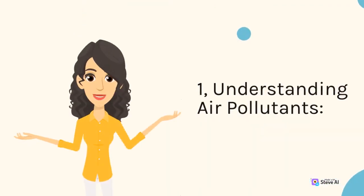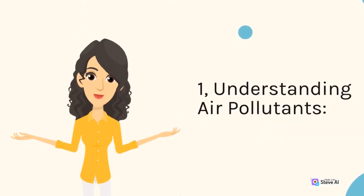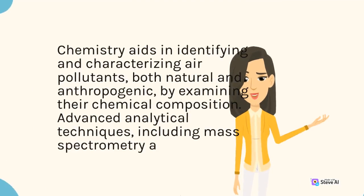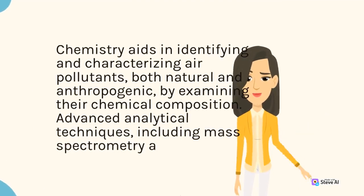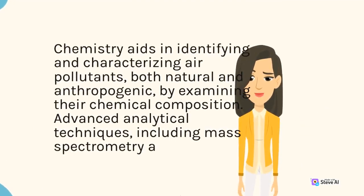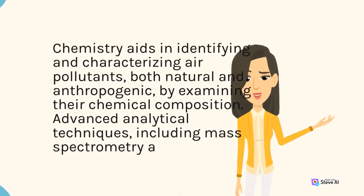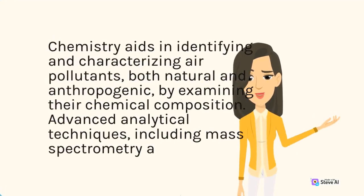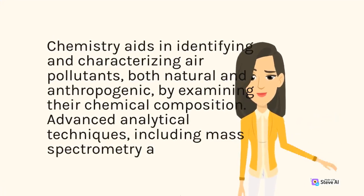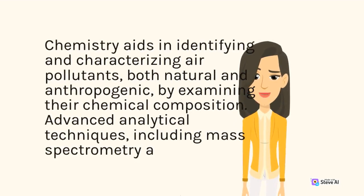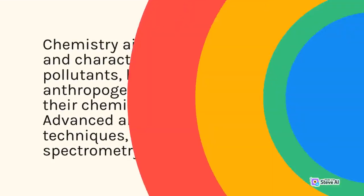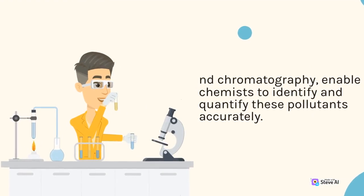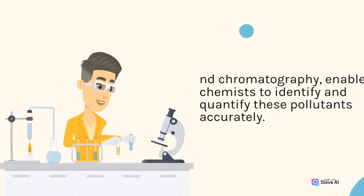1. Understanding Air Pollutants. Chemistry aids in identifying and characterizing air pollutants, both natural and anthropogenic, by examining their chemical composition. Advanced analytical techniques, including mass spectrometry and chromatography, enable chemists to identify and quantify these pollutants accurately.